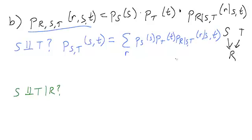And if we look carefully at this, we can see that the sum only depends on R. So we're summing over things that depend on R, but neither of these first two terms has any R in them. So we can actually factor them outside the sum. So this becomes P_S times P_T times the sum over R of P_R given S,T.